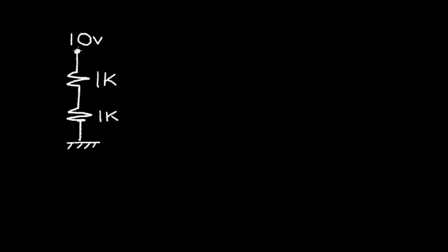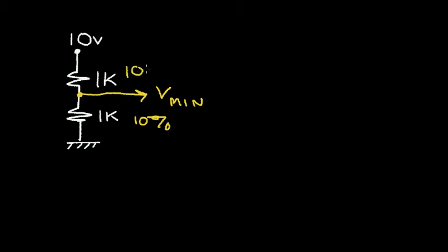Let's solve another resistor problem. Here I have a simple circuit — two 1K ohms in series, a 10 volt power supply at the top, and the bottom 1K is grounded. I want to compute the minimum voltage at this node — let's call it Vmin. I want to assume that the 1K resistors have a 10 percent tolerance, so each resistor can either increase or decrease by 10 percent. The power supply also has a 10 percent tolerance. Under these conditions, what is the minimum voltage Vmin measured from ground across the bottom 1K resistor? Put the video on pause and then we'll come back and solve the problem.